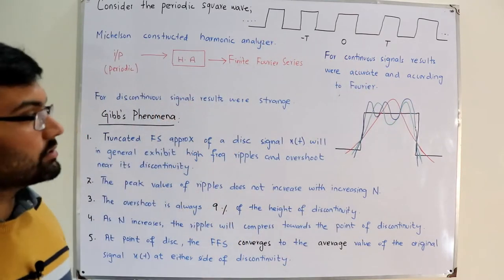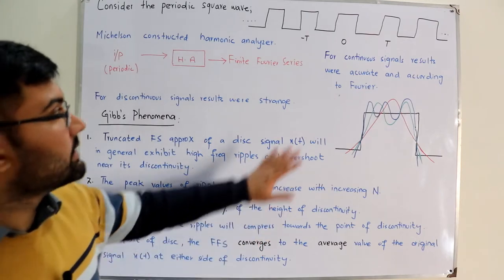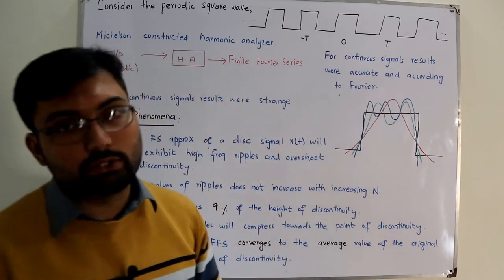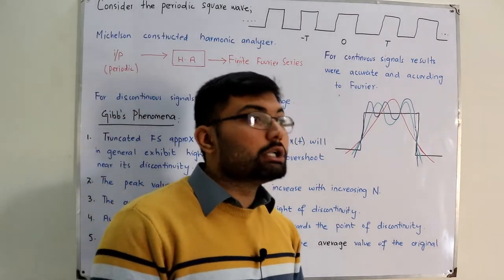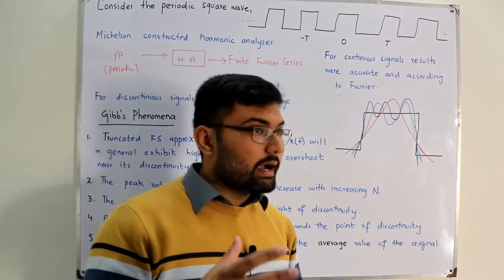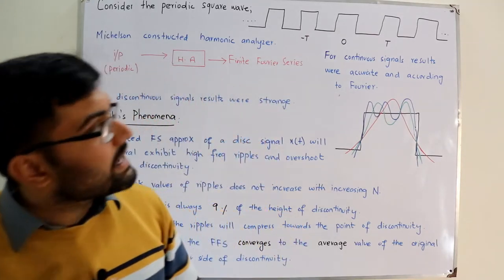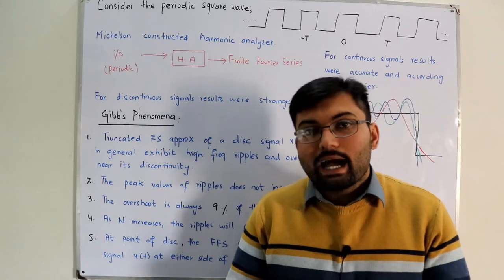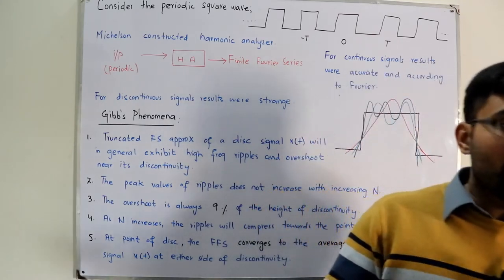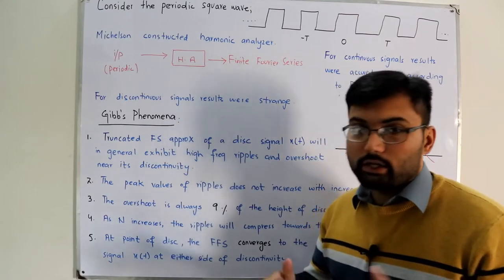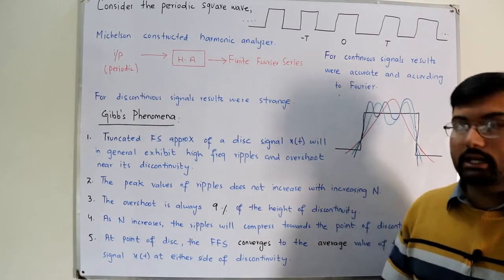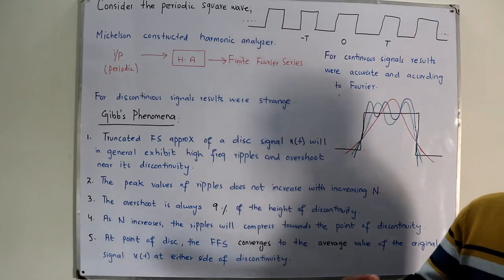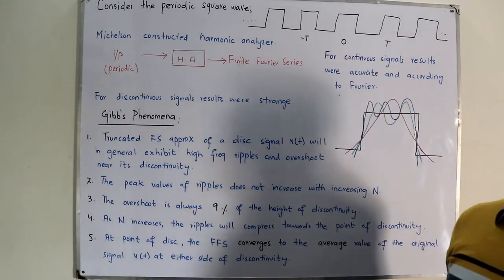Consider the periodic square wave — this is an important signal used widely with broad applications. You've studied it in digital logic design, microprocessors, and electronics. The question is: does it have a Fourier series representation? Fourier said it does have a Fourier series representation.